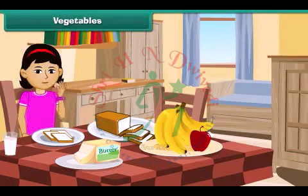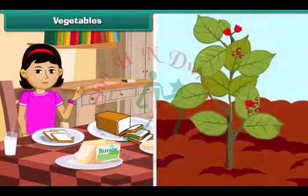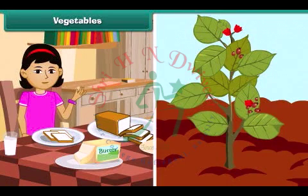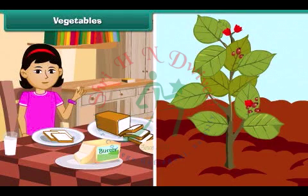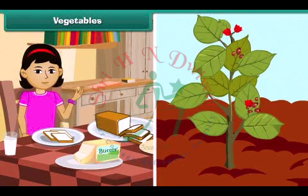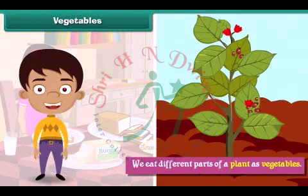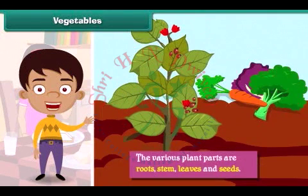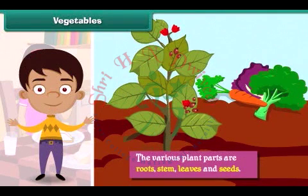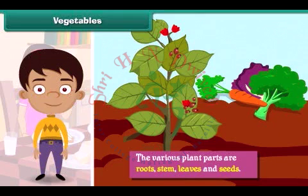We get our food from plants. The various parts of a plant are eaten as vegetables. We eat different parts of a plant as vegetables. The various plant parts are roots, stem, leaves and seeds.